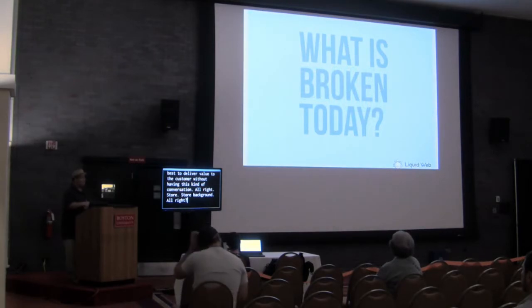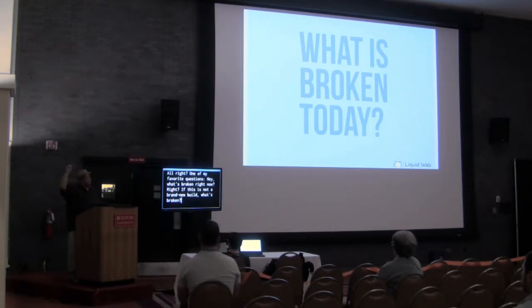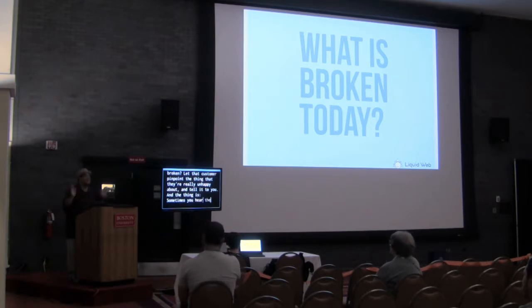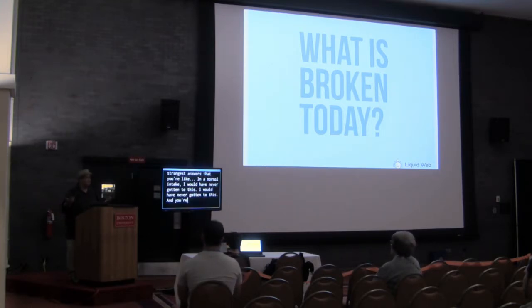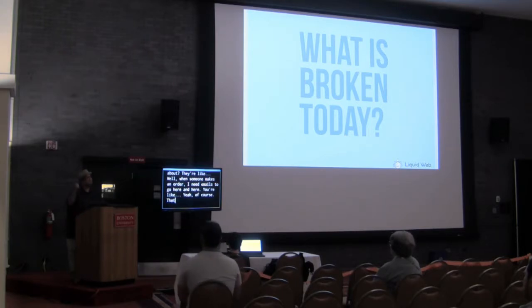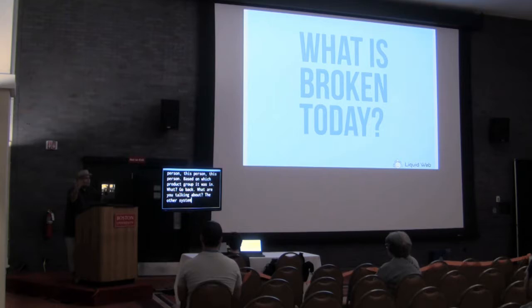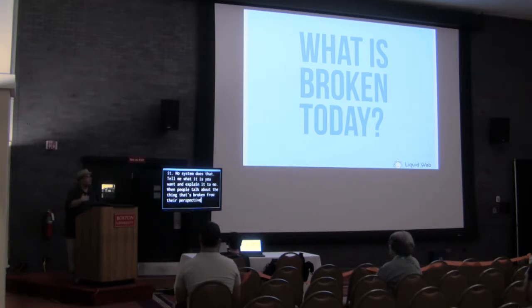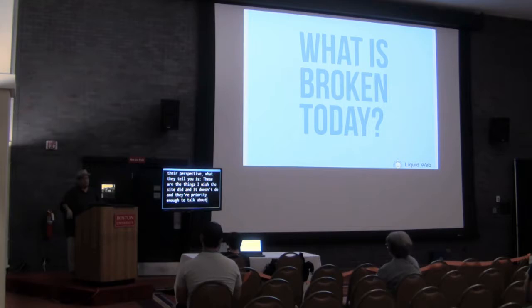One of my favorite questions for store background: what's broken right now? If this is not a brand new build, asking what's broken lets the customer pinpoint what they're really unhappy about. You sometimes hear the strangest answers — things you'd never have gotten in a normal intake. Like: 'When someone makes an order, I need emails to go to different people based on which product group it was in.' That's a custom requirement. When people talk about what's broken, they're telling you what they wish the site did that it doesn't — and they think it's a priority.